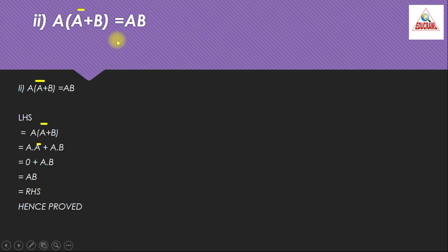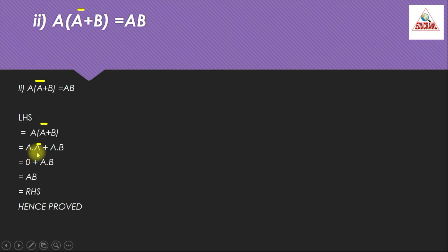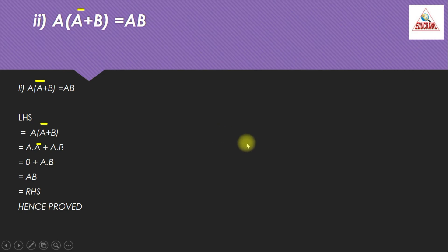Now the second expression: a·(ā+b) = ab. Starting with LHS: a·(ā+b). Distributing a inside the bracket: a·ā + a·b. By AND law 4, a·ā = 0. So the equation becomes 0 + ab = ab. This equals the RHS. Hence LHS = RHS and this expression is also proved.